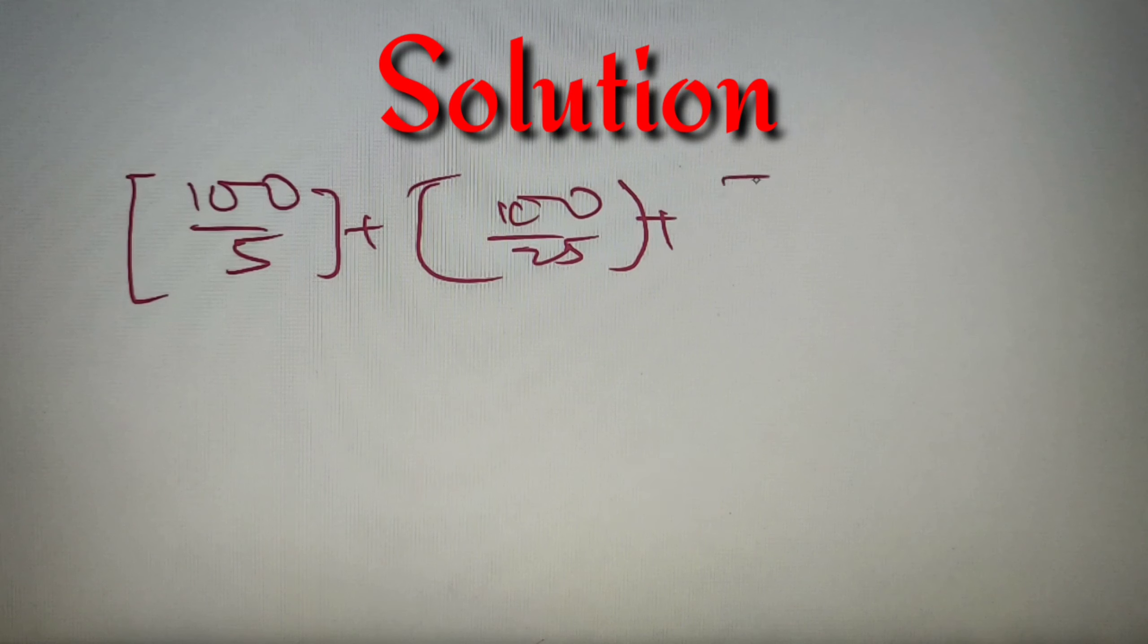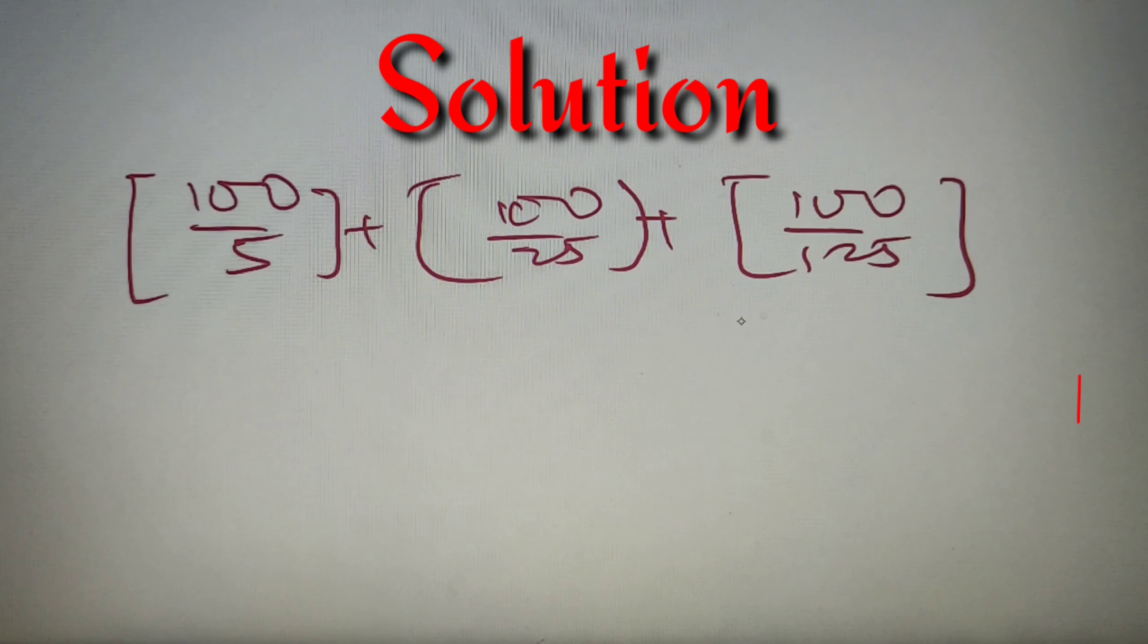So let's calculate it. Let's find the highest power of 5 in 100 factorial. Basically, we have to find the greatest integer value of 100 by 5 plus the greatest integer value of 100 divided by 25 plus the greatest integer value of 100 divided by 125. If you don't know this process, we have made a separate video on our channel. You can go watch that video first and then come to this video.